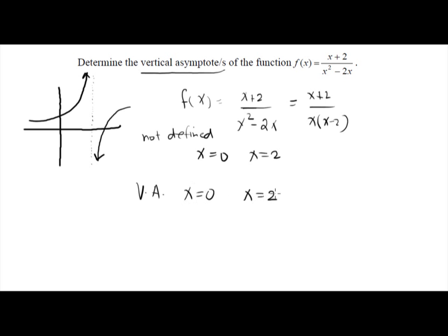To summarize: find where the function is undefined, and those numbers will determine the vertical asymptote. Don't forget to write the vertical asymptotes properly as x equal to a number — in this case, x = 0 and x = 2.